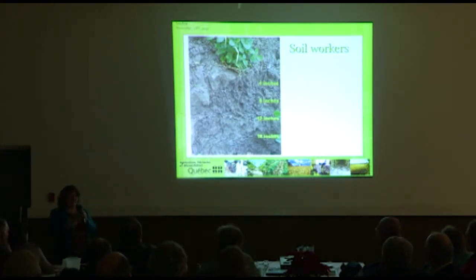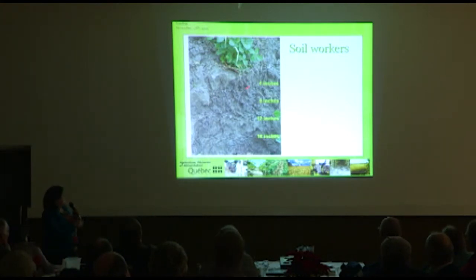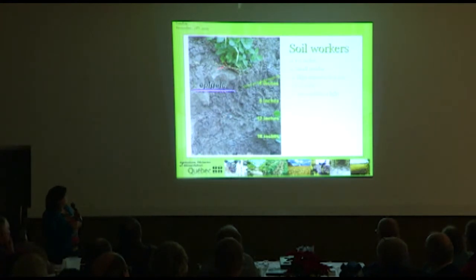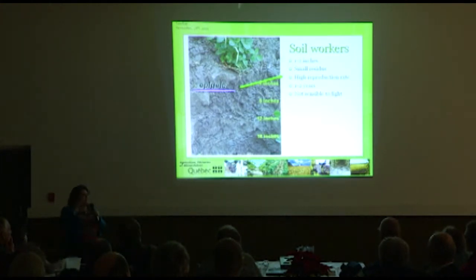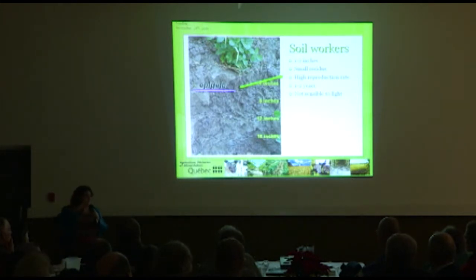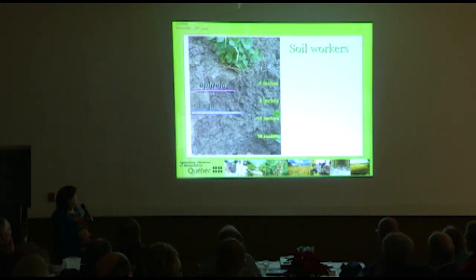There are three main families of earthworms. The first are the epigeic: they work in the first two inches and deal with small residue, picking it up and mixing it into the topsoil. They have a very high reproductive rate because they work in a very vulnerable area. They live about one to two years and are not sensitive to light.